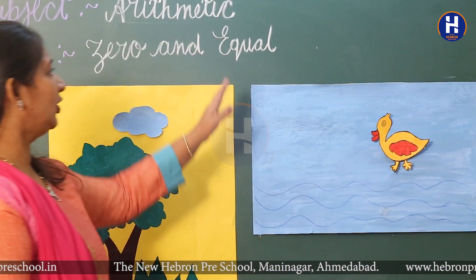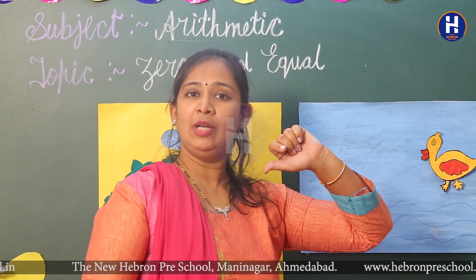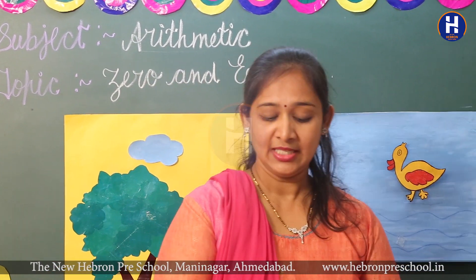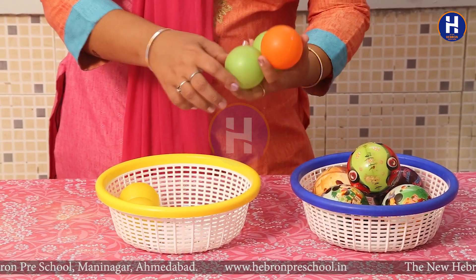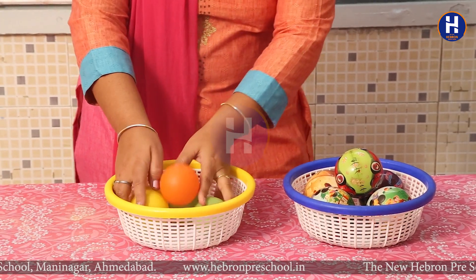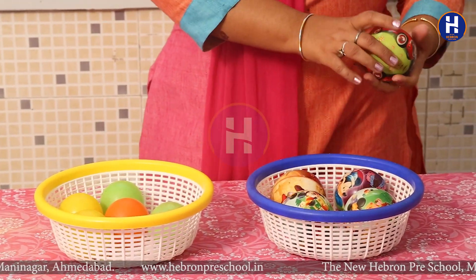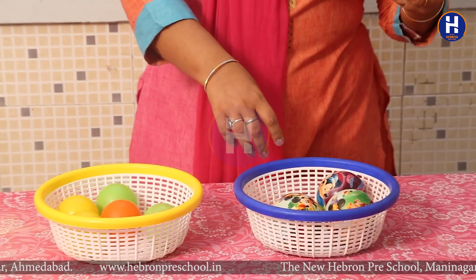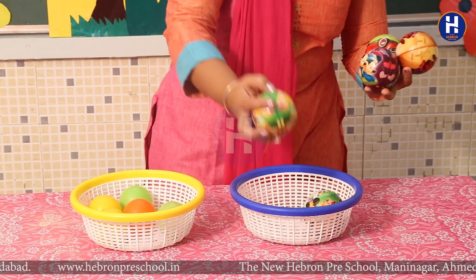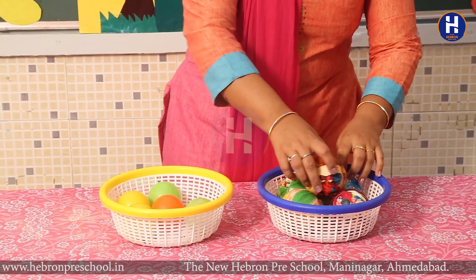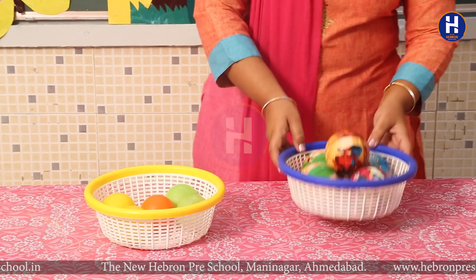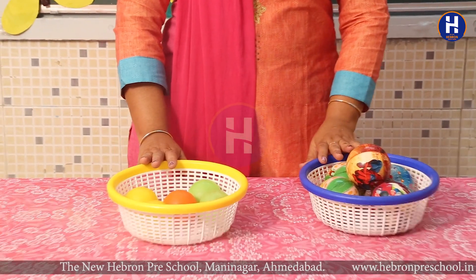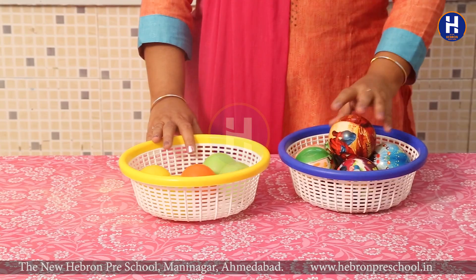Now let's go to another topic — that is equal. Equal means same. See, I am having five balls: one, two, three, four, and five balls in one basket. And in the other basket also I am having five balls: one, two, three, four, and five. See, I am having the same number of items in both the baskets — that means it is equal number.